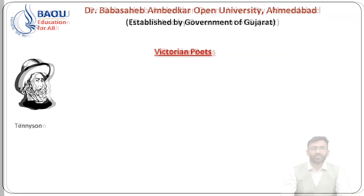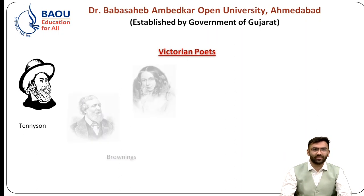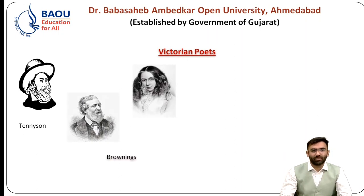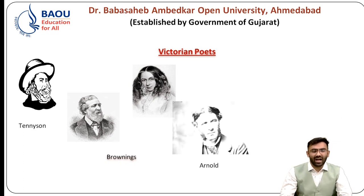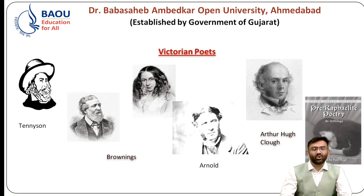Which are the Victorian poets that come to your mind when you think of Victorian poets? One and the obvious is Alfred Lord Tennyson. Then the Brownings — Robert Browning and Elizabeth Browning, who were married. Then Arnold, known as Matthew Arnold. Then Arthur Hugh Clough. And of course you must know something about Pre-Raphaelite poets, which was a group. We will be looking at them one after the other.